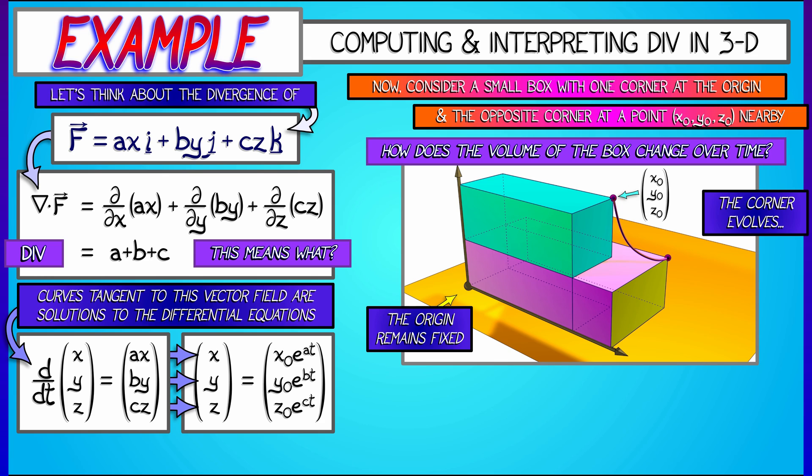The solution to dx/dt equals ax is x-naught, the initial condition, times e to the at. Similar things happen for y and z. We get that y is y-naught e to the bt, z is z-naught e to the ct, as single variable calculus tells us.